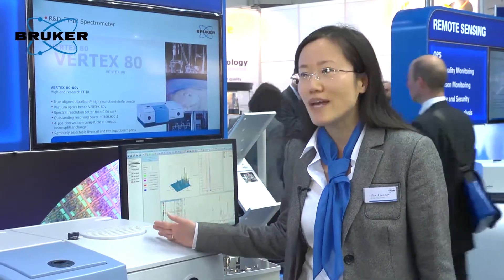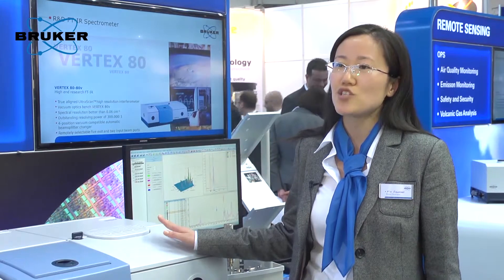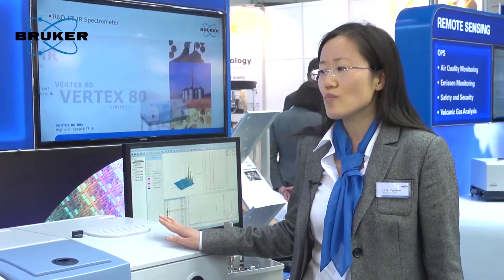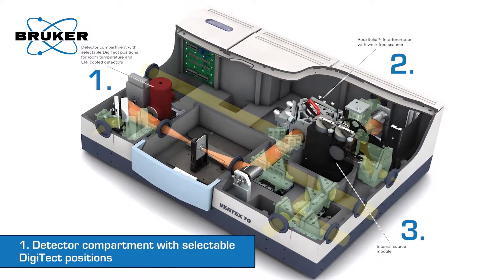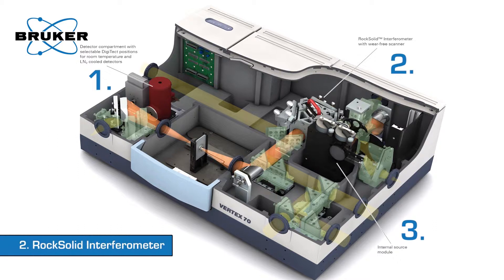Every spectroscopist dreams of a broad spectrum range. To cover a broad spectrum range from the MIR to FIR region, we have to change the main optical components: the detector, the IR source, and the beam splitter.